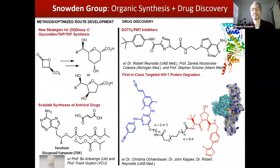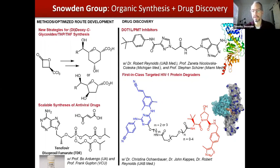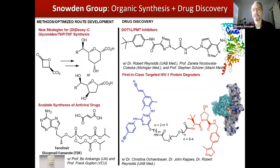Another project that we spent a couple of years working on was the development of DOT1L inhibitors. These are protein methyltransferase inhibitors that may serve as anti-cancer agents. A current project, with a representative example shown in the bottom right of this slide, is the potential development of what would be a first-in-class compound that can serve to degrade a specific protein associated with HIV infection. This type of antiviral treatment could be a new approach for a wide range of viral infections, and we hope to demonstrate it through HIV treatment first.